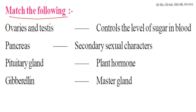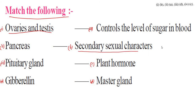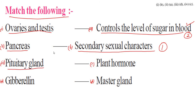Match the following. Number one: ovaries and testes — matched with secondary sexual characters. Number two: pancreas — controls the level of sugar in blood. Number three: pituitary gland — is the master gland. Number four: gibberellin — is a plant hormone.